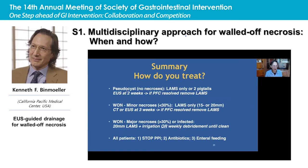In summary: for a pseudocyst without necrosis, use LAMS only or a couple of pigtail stents. Perform ultrasound at two weeks — most resolve nicely — then remove the LAMS. For walled-off necrosis with minor necrosis, place LAMS only (15 or 20 mm), get CT or ultrasound at three weeks, and remove if resolved. For major necrosis — more than 30% — or infected necrosis, use a 20 mm LAMS, add irrigation, or perform weekly debridements until clean if a nasal cystic catheter is not an option. For all patients, stop PPIs, keep on antibiotics, and start enteral feeding immediately because these patients are in a catabolic state.